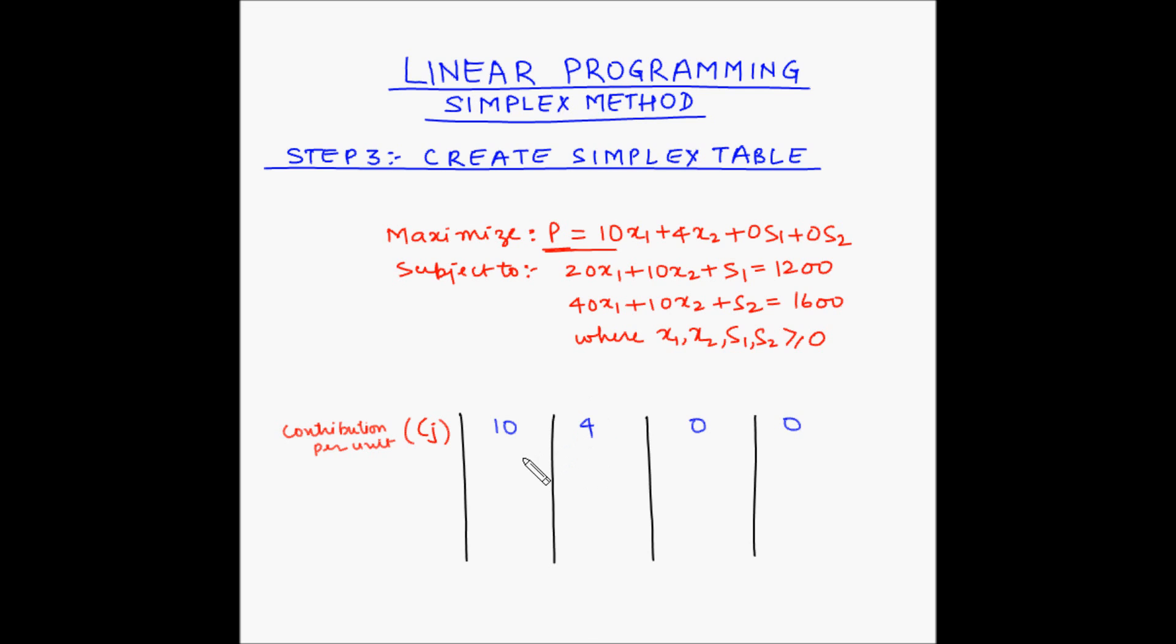Now let us move to the second row of the table. The second row of the table indicates the variables in the problem for which the cj component have been written in the first row. So in the first row we have written the coefficients. Now in the second row we will write the variables corresponding to the coefficients.